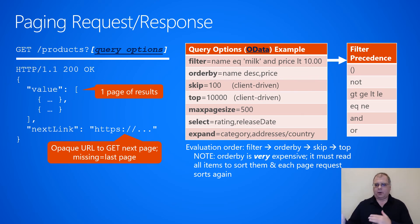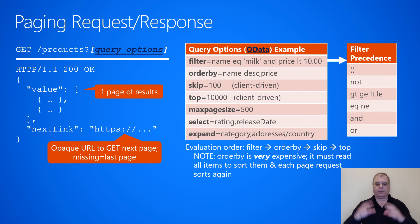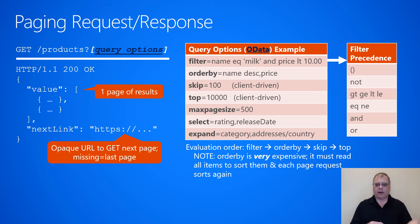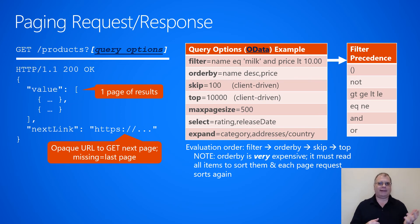On the far right of the slide, there is a table showing filter precedence. If you support filters, it's common to support parentheses, the not operator, greater than, greater than or equal to, less than, less than or equal to, equal to, not equal to, and or. That is the typical order of precedence that customers should expect your service to honor.